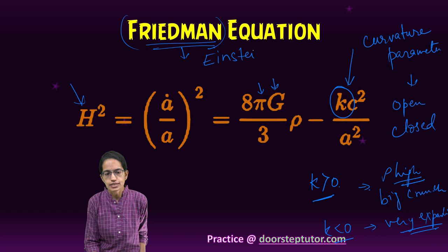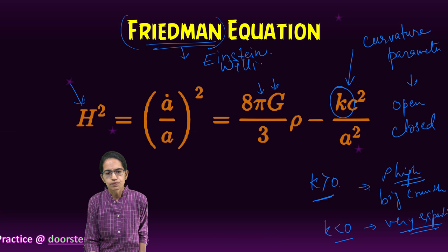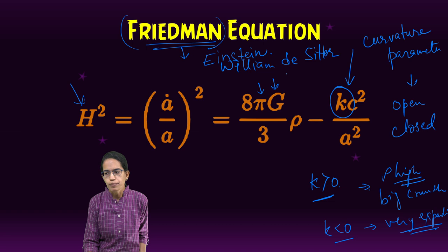The second is a scientist from the Netherlands, Willem de Sitter. And the third is a scientist from Belgium in the name of Georges Lemaître.